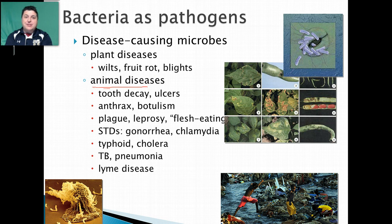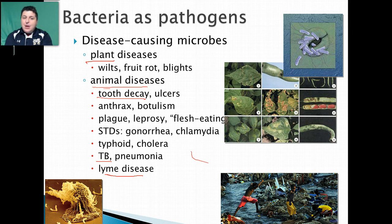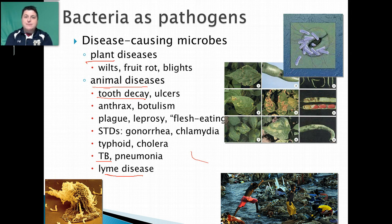Of course we have to remember that bacteria are pathogens — they can make us sick and make plants sick. Different diseases cause fruit to rot, plants to wilt, and animal diseases ranging from tooth decay to tuberculosis or Lyme disease. We have to find ways to deal with these bacteria so that while they exist, they won't be too much of a detriment to our human health. Bacteria are all around us — they're microorganisms that we have to know and understand so that we can coexist with them.